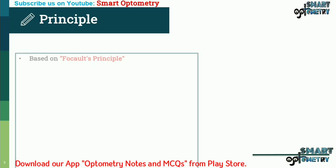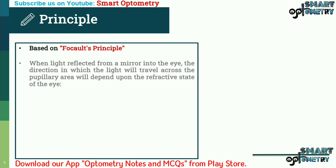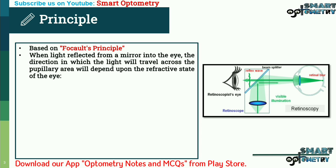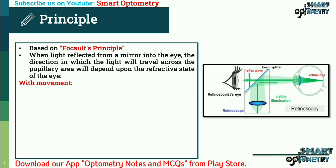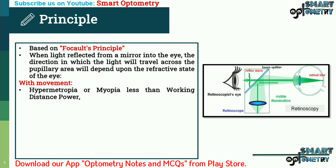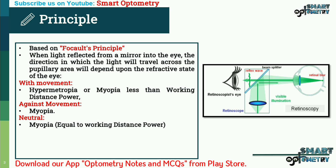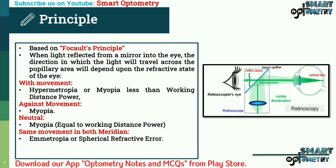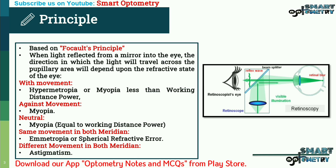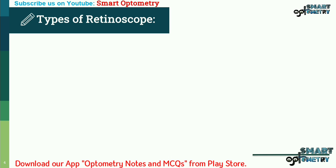The principle of retinoscopy is based on Foucault's principle. When light reflected from a mirror enters the eye, the direction in which the light travels across the pupillary area depends upon the refractive state of the eye. With movement indicates hypermetropia or myopia less than working distance power; against movement indicates myopia greater than working distance; neutral movement indicates myopia equal to working distance power. Same movement in both meridians indicates emmetropia or spherical refractive error; different movement in both meridians indicates astigmatism.